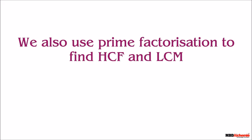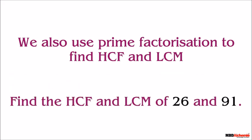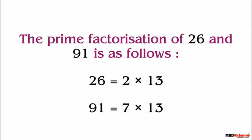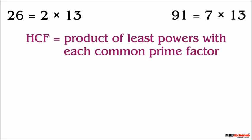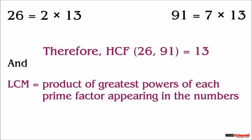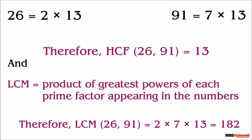We also use prime factorization to find HCF and LCM. Let's recall: find the HCF and LCM of 26 and 91. The prime factorization of 26 is 2 into 13, and of 91 is 7 into 13. The common factor of 26 and 91 is 13, with least power 1. Since HCF is the product of least powers of each common prime factor, HCF of 26 and 91 is 13. LCM is the product of greatest powers of each prime factor appearing in the numbers, so LCM of 26 and 91 is 2 into 7 into 13, which equals 182.